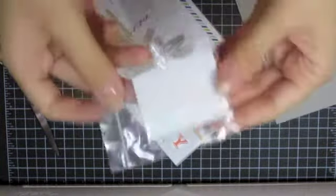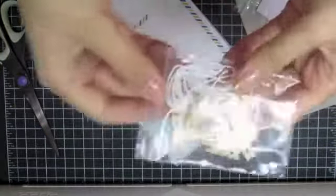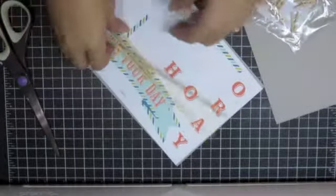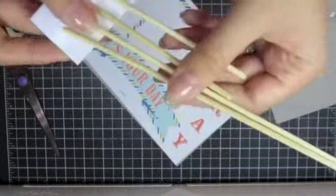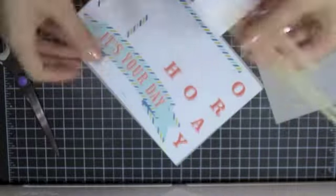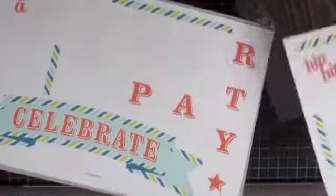All right, we get some Stampin' Dimensionals, some cute little clothespins and some string, some wooden dowels, some sticks, and then we get the little paper punch-out banners.